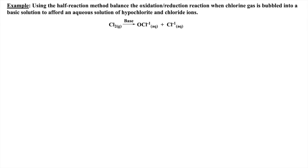In the next example, we first use our nomenclature knowledge to write the unbalanced equation from the word problem. Again, notice I wrote the word 'base' over the arrow to remind myself that we are in basic solution. Now, split reactants and products into two half reactions: the reduction and oxidation reactions. Let's apply the next several steps to the reduction half reaction first, then we can tackle the oxidation half reaction.